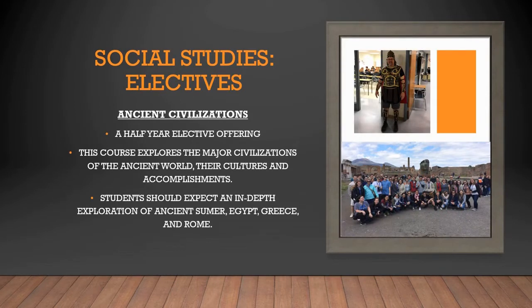For those of you who really liked ancient civilizations in ninth grade, Ancient Civilizations is a half-year elective course where you get to explore ancient Sumer, Egypt, Greece, and Rome. You'll learn about the various social structures, building and planning, architecture, and how these various civilizations interacted with one another. Very exciting.